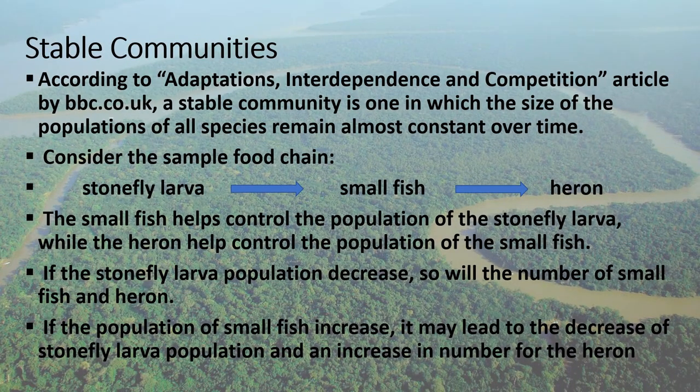Stable Communities: according to the Adaptations, Interdependence, and Competition article by bbc.co.uk, a stable community is one in which the size of the population of all species remains almost constant over time. Consider the sample food chain: stonefly larvae is eaten by a small fish, and the small fish is eaten by a heron. The small fish helps control the population of the stonefly larvae, while the heron helps control the population of the small fish. If the stonefly larvae population decreases, so will the number of small fish and heron. If the population of small fish increases, it may lead to the decrease or extinction of the stonefly larvae population and an increase in the number of heron.